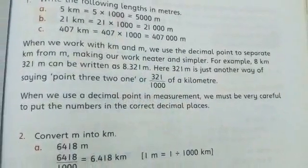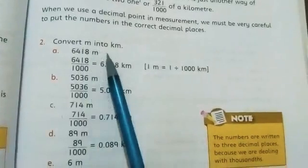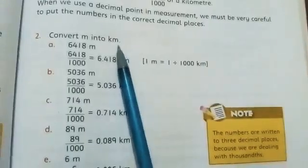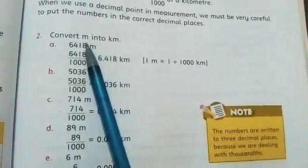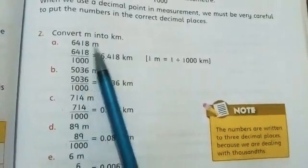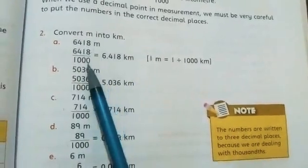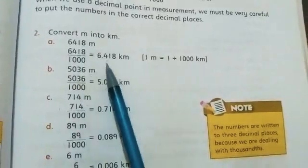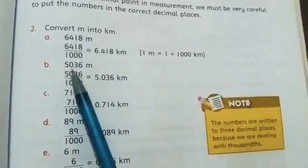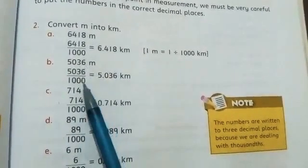Now let's see the next question. Convert meter into kilometer. Now you have to go from smaller unit to bigger unit. Remember, when you go to bigger unit, then division. Like here, 6418 meters - if you find out how many kilometers, we divide it by thousand. The answer will be 6.418 kilometers. Similarly here, if you convert it into kilometer, divide it by 1000.